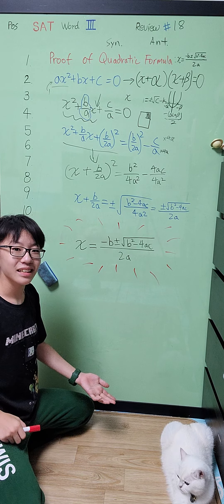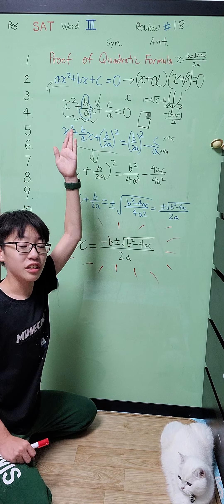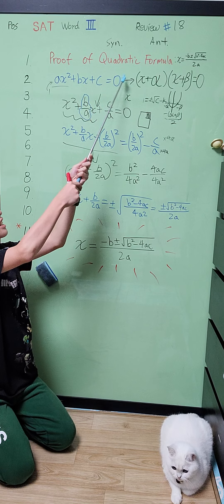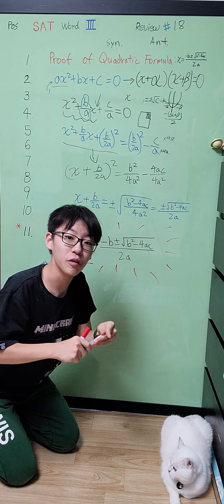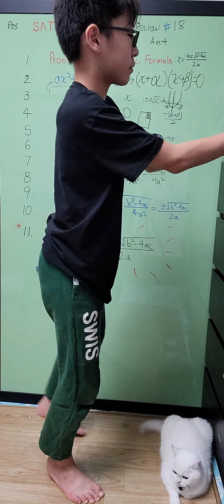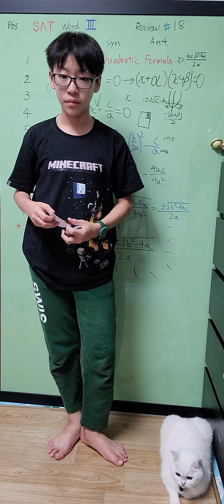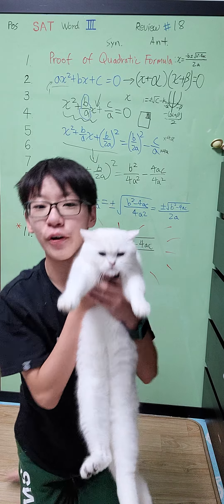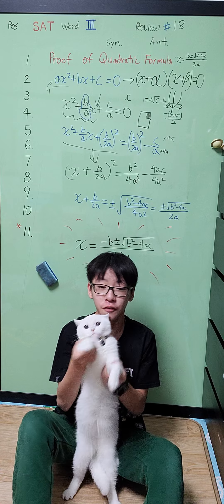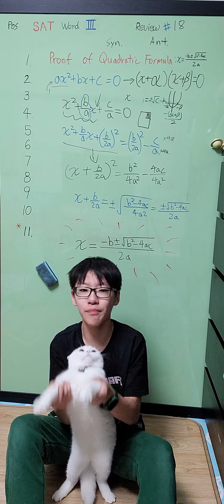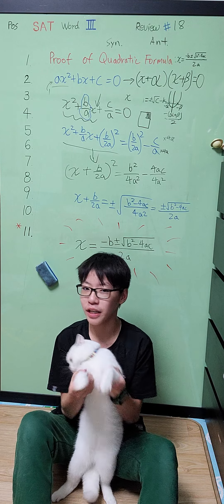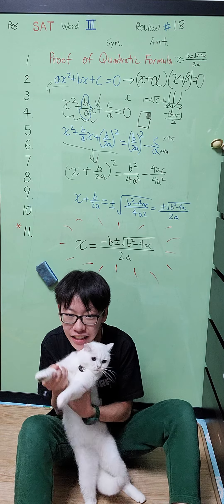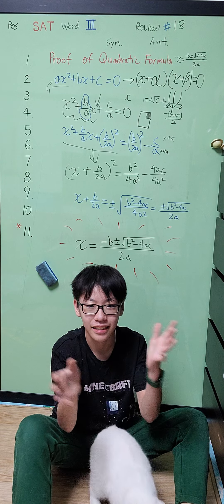Ta-da! And that is the proof of the quadratic formula and why it works on the standard form of the quadratic equation. And so there you have it folks — now it's test time. Bye-bye! With Professor Claude singing the quadratic formula song: x equals minus b plus or minus the square root of b squared minus 4ac, divide by 2a.